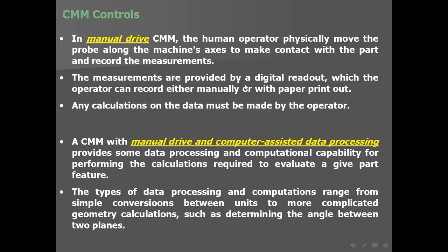The second configuration is manual drive with computer-assisted data processing, providing data processing and computational capability for performing the calculations required to evaluate a given part feature. The drive is still manual, but the computer assists with calculations ranging from simple unit conversion to more complex geometry calculations such as determining the angle between two planes.